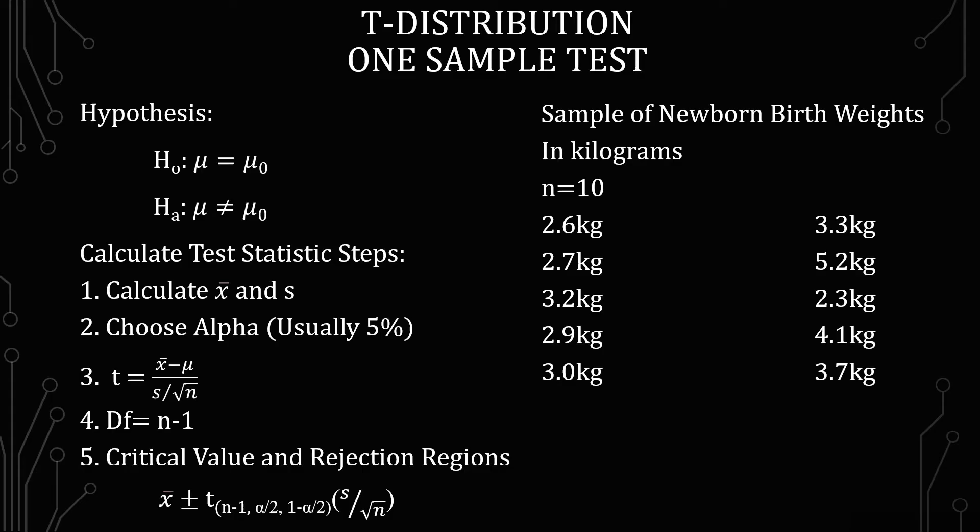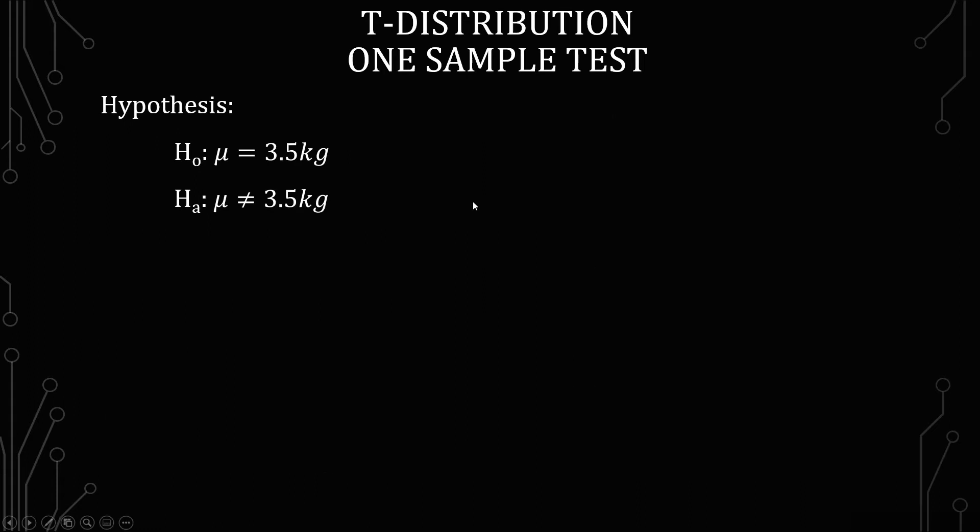So I have here a sample of newborn birth weights, and they're in kilograms. We have 10 of them, and we're going to use this sample for going through the process we just did. This is what a hypothesis looks like when you have an actual number that you're comparing with μ. The null hypothesis is that μ equals 3.5 kilograms. The alternative is that μ does not equal 3.5 kilograms.